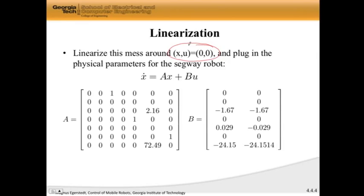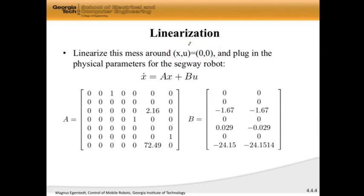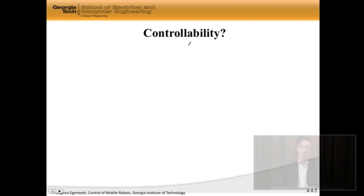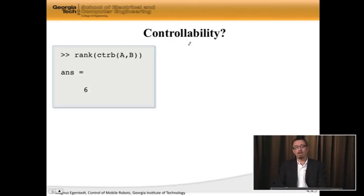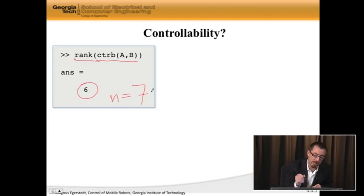Before we even attempt pole placement, let's make sure that we can indeed do it. So the first thing we have to check now for this system is controllability. This is too big, so I'm going to go to MATLAB right away and write, here's the controllability matrix on my A and B, here's the rank, and out comes six. Does anyone remember what n was in this case? Well, I do. n was equal to seven.